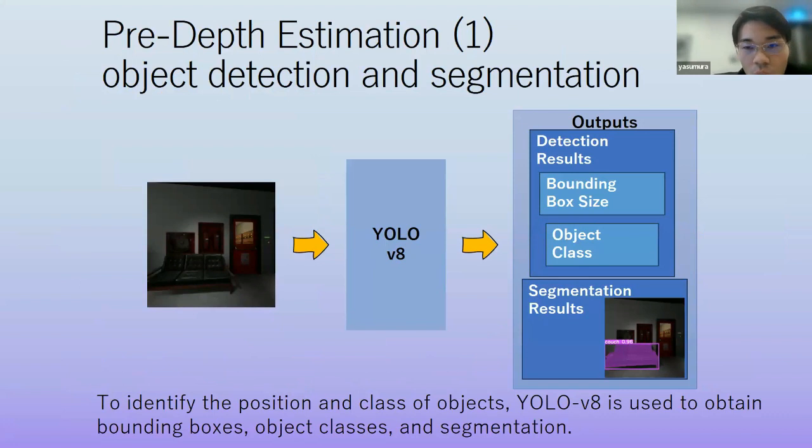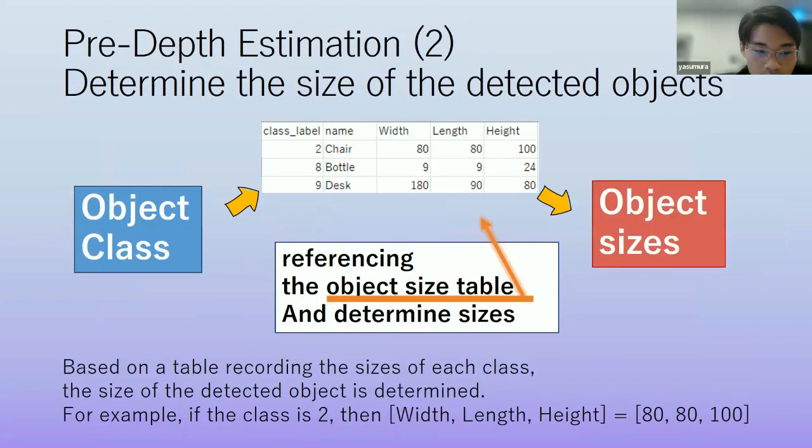So we want to utilize the size perspective. So we have to obtain the information about the object. So we use YOLO v8 to obtain the bounding boxes and object classes and segmentation. Next, we have to obtain also object actual size. So we prepare some table. It recorded the size of each classes and by referencing the object size table. And we determine the size of detected object. For example, if the detected object class is 2, it means chair. So then width and length and height size equal 80, 80, 100 like this figures.